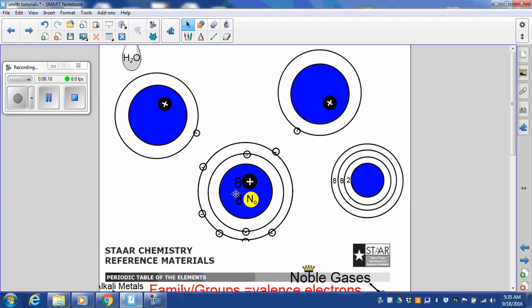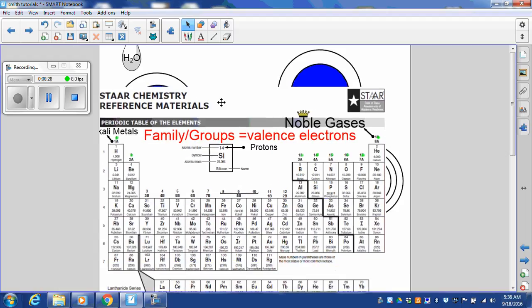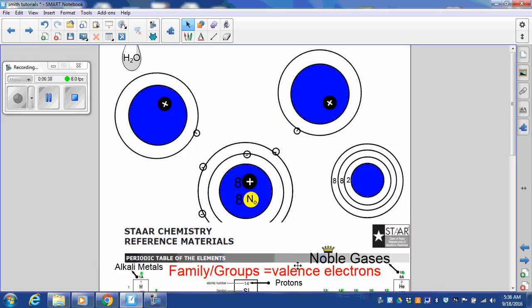Let's look at oxygen. Here. One, two, three, four, five, six valence electrons. What family group? Look at that. Sixteen. It happens every time. Valence electrons and family group number.